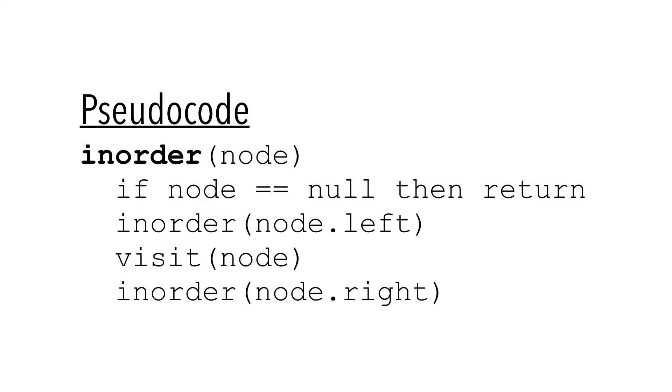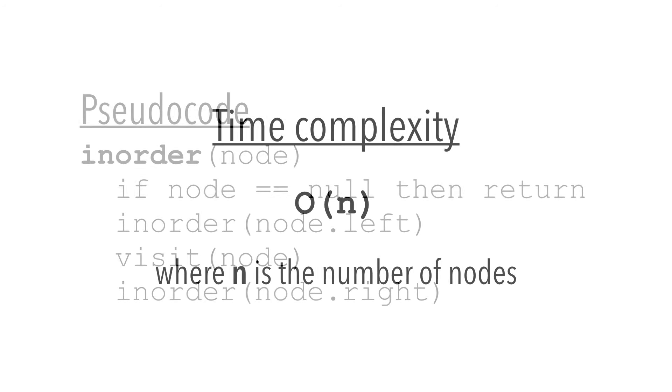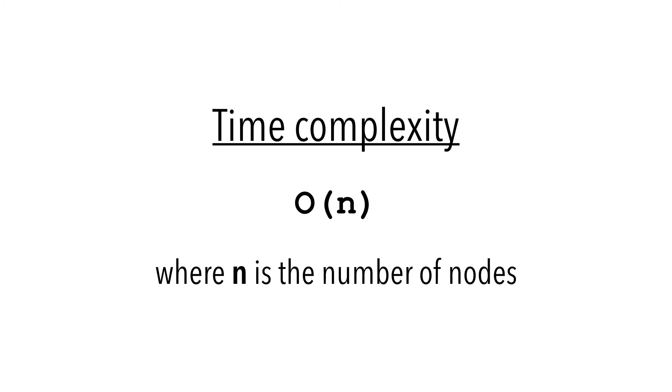Here's a pseudocode for in-order tree traversal. Time complexity is big O of N, as we call visit on each node exactly once.